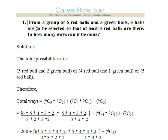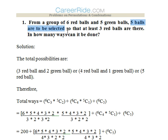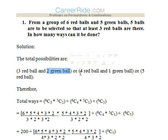From a group of six red balls and five green balls, five balls are to be selected so that at least three red balls are there. How many ways are there by which it can be done? There are six red balls and five green balls and five balls are to be selected. The total possibilities, since at least three red balls should be there, the minimum possibility would be three red balls and two green balls. Other than that, it would be four red balls and one green ball, or all five balls are red.